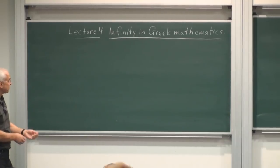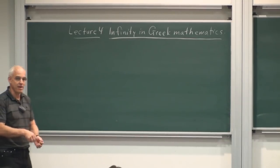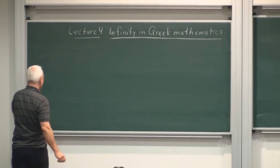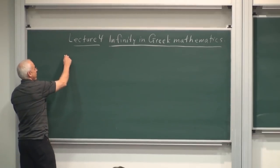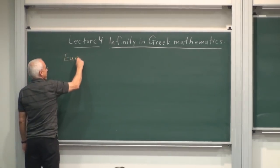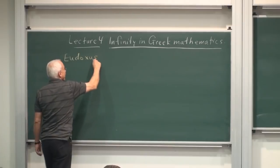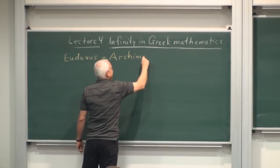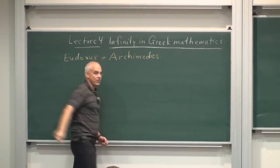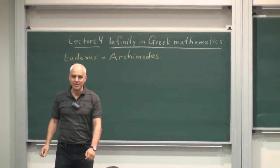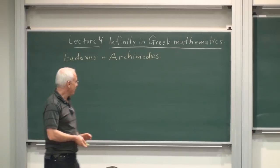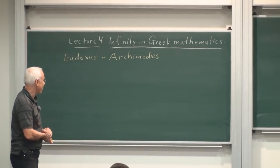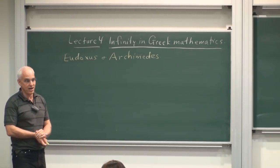This is a rather interesting chapter today because we meet two of the greatest mathematicians of the ancient age, Eudoxus and Archimedes. And we also discuss the ancient Greeks' attitude towards infinity, which was quite a different attitude than we have today.